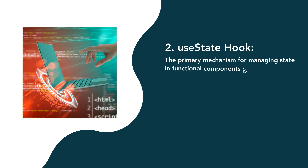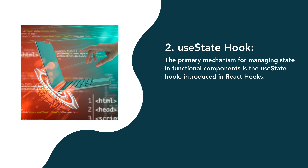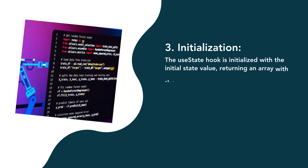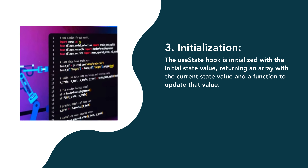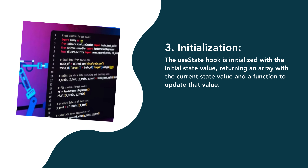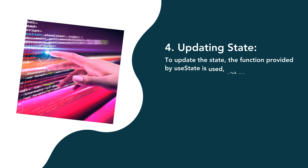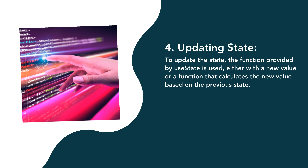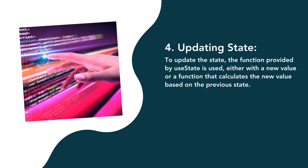The primary mechanism for managing state in functional components is the useState hook, introduced in React hooks. The useState hook is initialized with an initial state value, returning an array with the current state value and a function to update it. To update the state, the function provided by useState is used either with a new value or a function that calculates the new value based on the previous state.